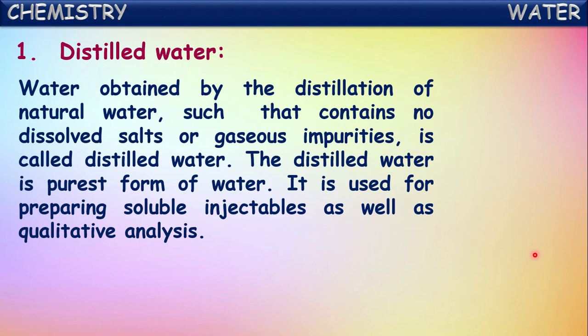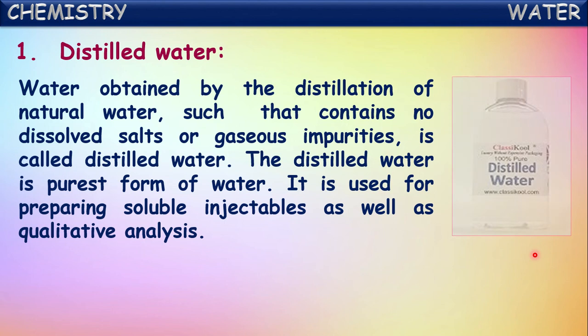In the distillation process, an impure sample of water is taken into a container and heated strongly. The water evaporates, the vapors are collected into another container and cooled, then condensed to form pure water. This pure water obtained through the continuous process of evaporation and condensation is called distilled water - it contains only water, with no salts, gases, or other impurities.